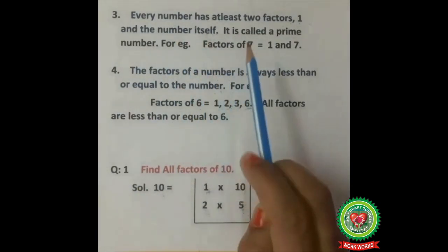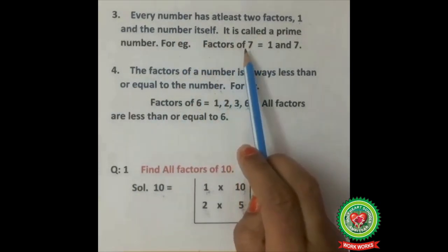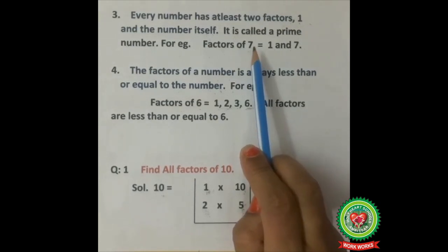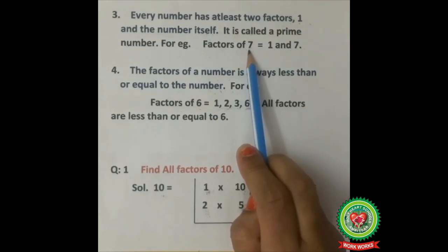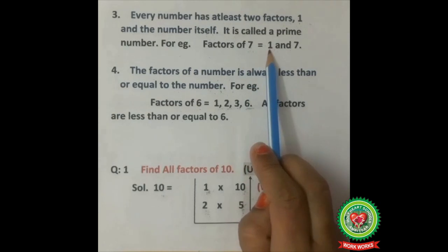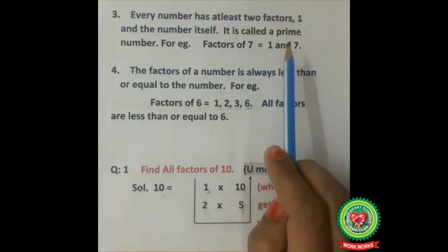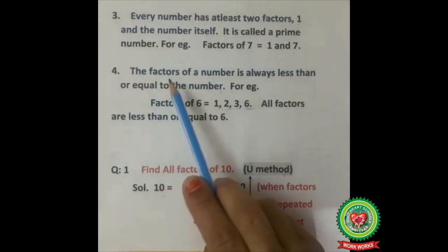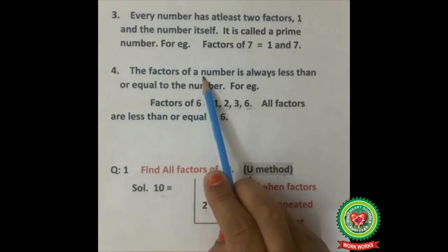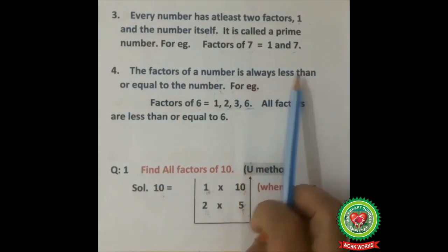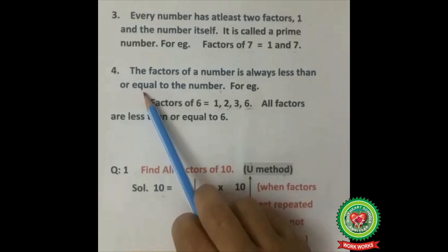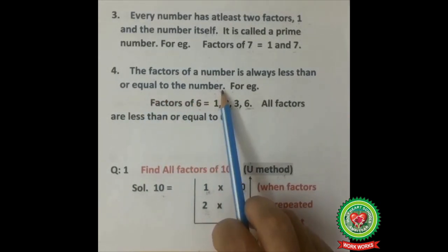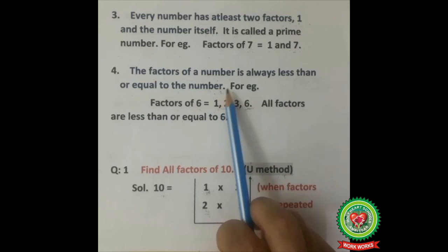Let's see one example: factors of 7. Seven is a prime number, so what are the factors of 7? They are 1 and 7. Fourth point: the factors of a number are always less than or equal to the number — a factor should not be bigger than the given number.